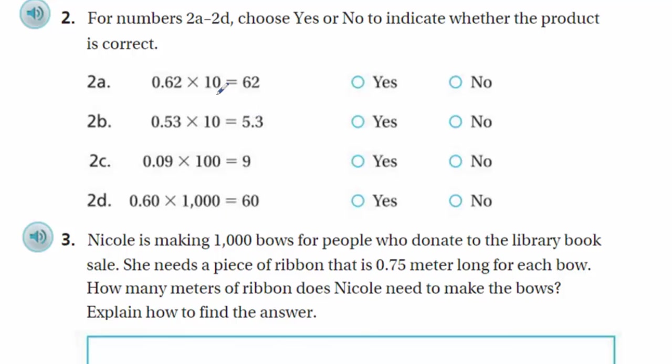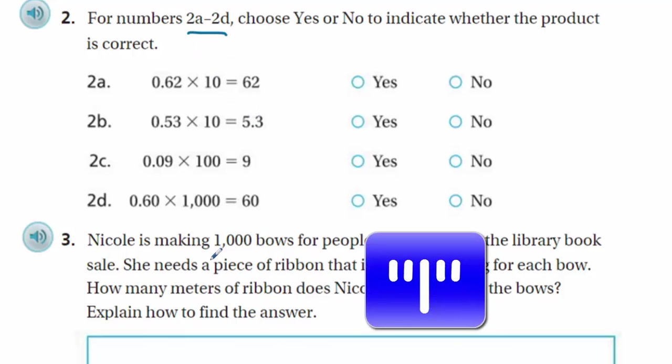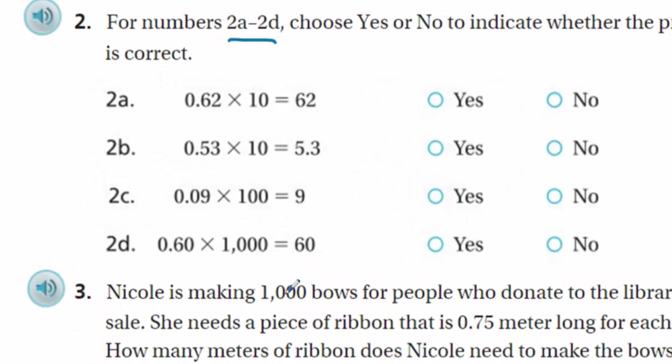Let's kind of keep going here. For numbers 2A through 2D, it says choose yes or no to indicate whether the product is correct. Oh, I love these. Because, let's face it. We have a 50-50 chance of getting these right. And I really do want to try to get these right. We have 0.62 times 10. Oh, these are fun. These are fun because, you know, we really don't have to do any work over here. See, I just mentioned earlier that any time you multiply a number by a power of 10, that you're actually moving the decimal place to the right. If you're multiplying by a power of 10. Of course, if you're dividing by a power of 10, that's different. So, here, we're just doing one decimal place.